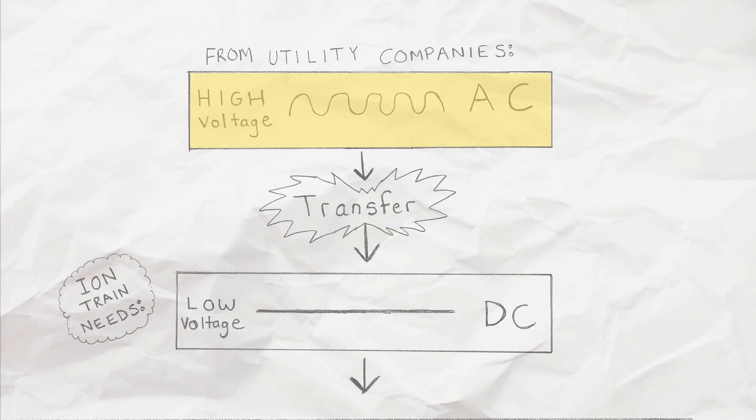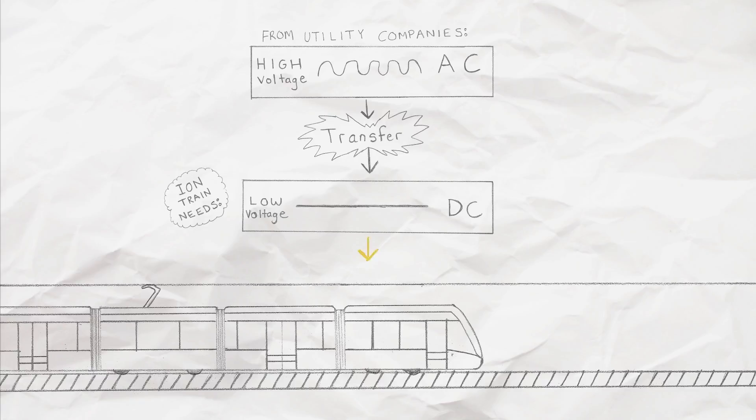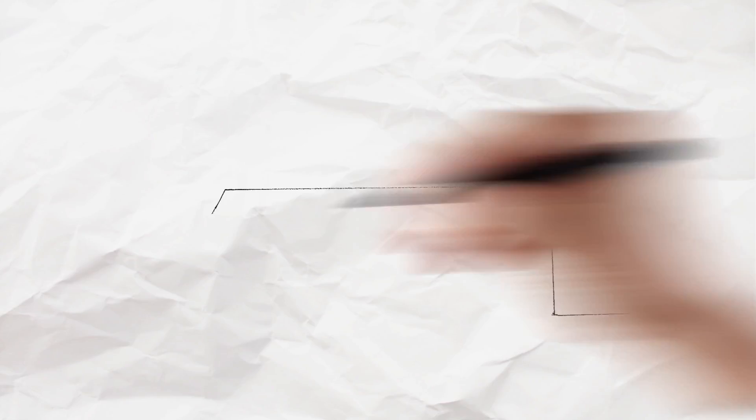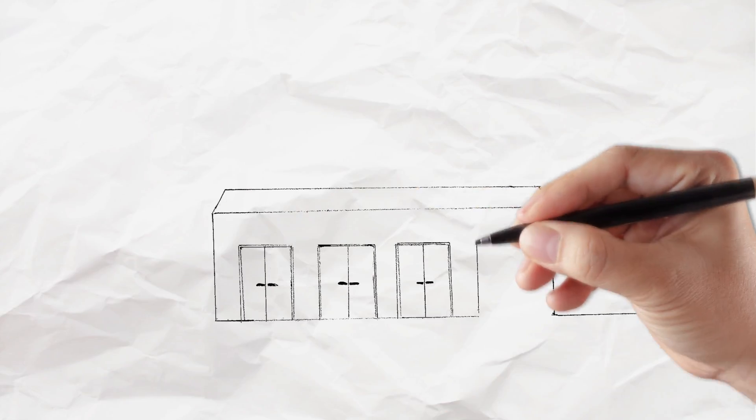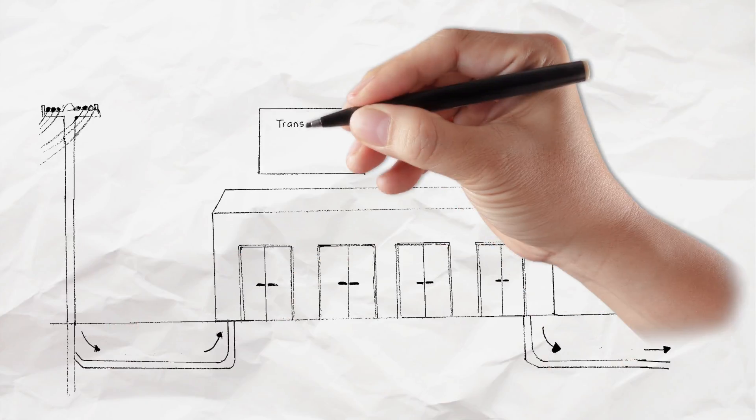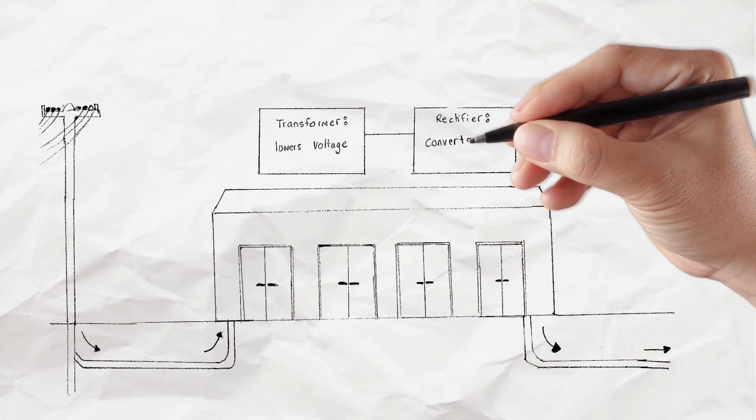To do this, we need to transfer the high voltage alternating current that comes from the utility company to low voltage direct current. We do this in a structure called a traction power substation or TPSS. These substations contain many pieces of equipment to make the conversion happen. This equipment includes a transformer and a rectifier.